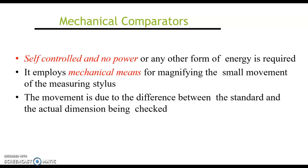The main feature of a mechanical comparator is that it is self-controlled — no power or any form of energy is required for its operation. It employs mechanical means for magnifying the small movement of the measuring stylus.